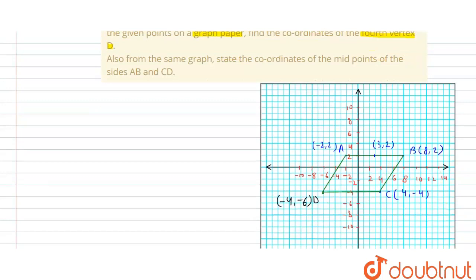The midpoint of CD lies at the third point — counting one, two, three. The coordinate of this point: X is minus one and Y is minus four. So the midpoint of CD is (-1, -4).